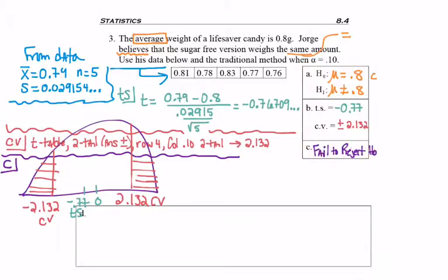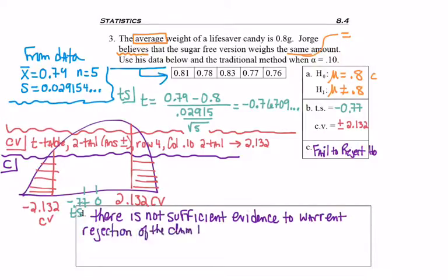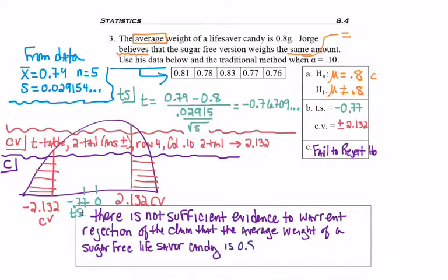And so based on a claim of H-naught and failing to reject H-naught, my final conclusion reads, there is not sufficient evidence to warrant rejection of the claim that the average weight of a sugar-free Lifesaver candy is 0.8 grams. And again, the parameter being discussed is average, the context is that it's the average weight of sugar-free Lifesaver candies, the claim is that it is equal to, and the value it's equal to is 0.8.